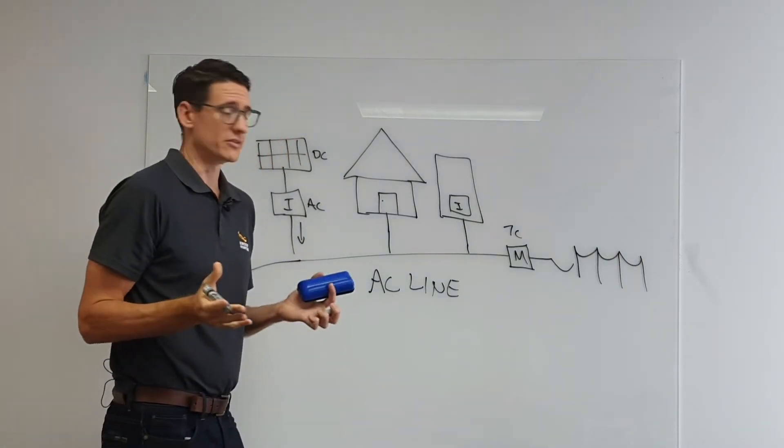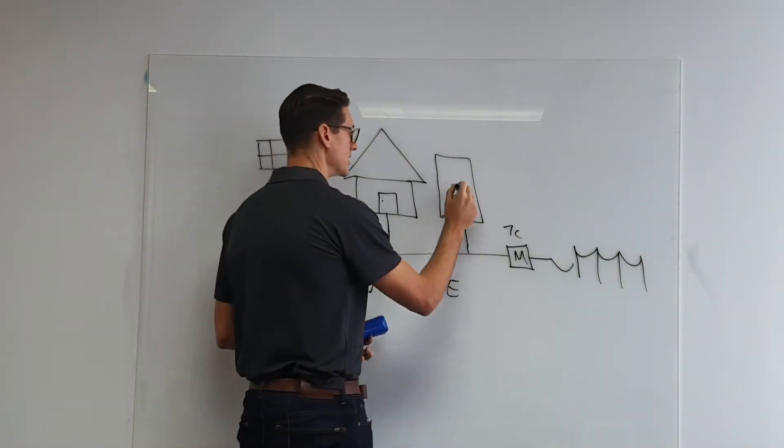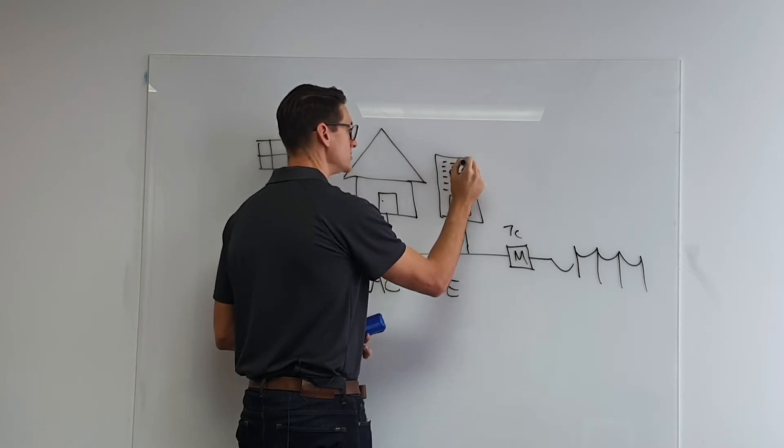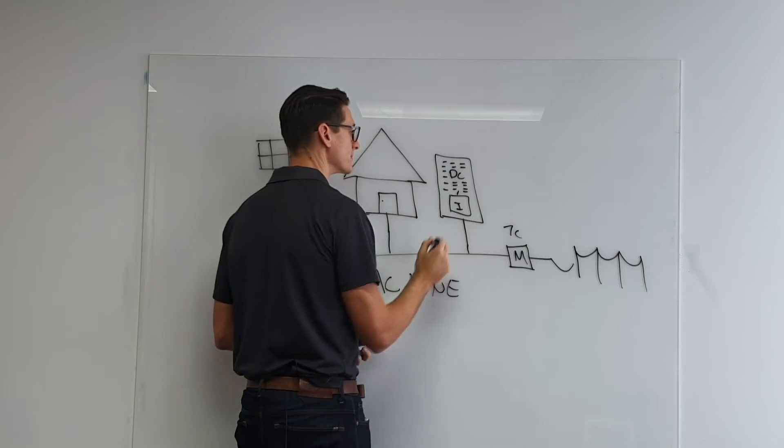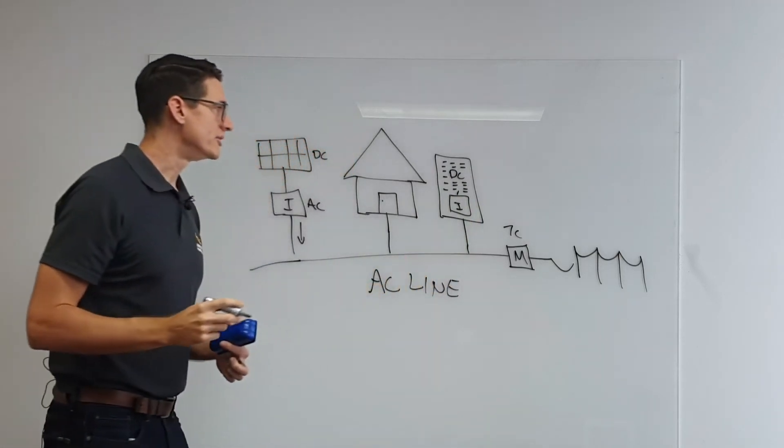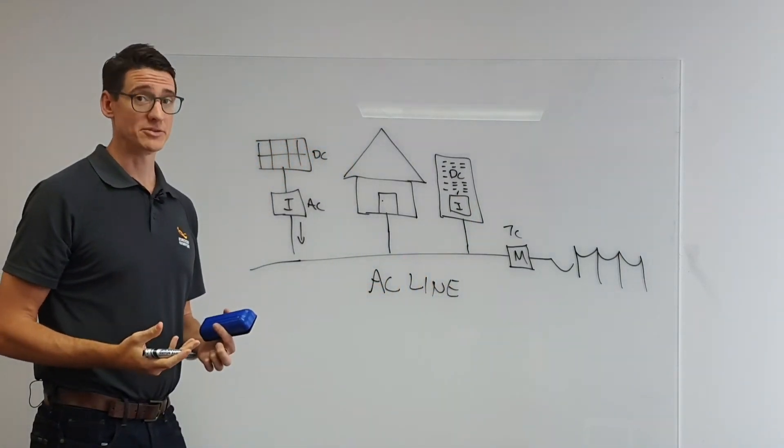And then what that does is it feeds the battery cells that are ultimately, battery energy is stored in DC power. So that's the way an AC couple battery connects.